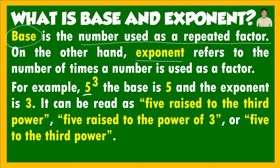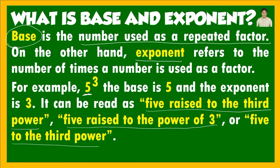Five is repeated three times as a factor because 5 is raised to 3. Our given can be read as '5 raised to the third power,' '5 raised to the power of 3,' or '5 to the third power.' The quickest way to remember: the number written on top is called the exponent or power, and the one on the bottom is always the base.